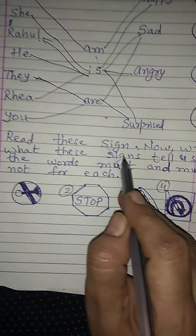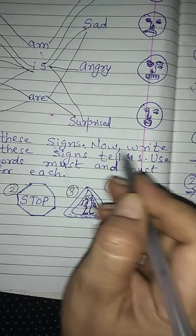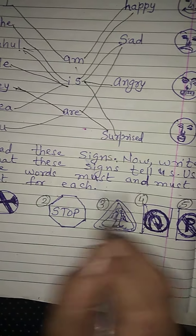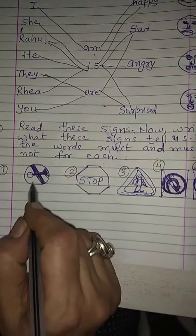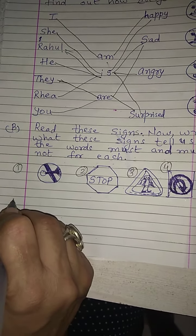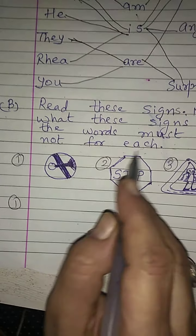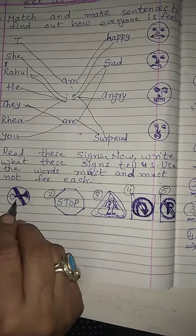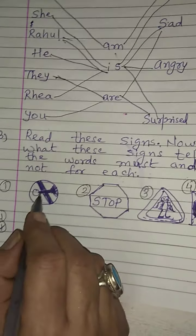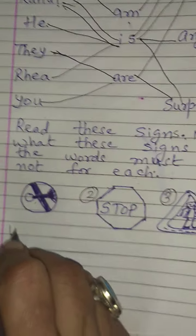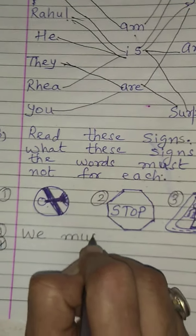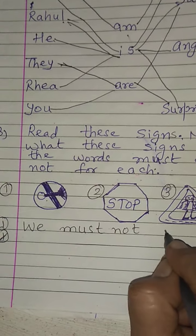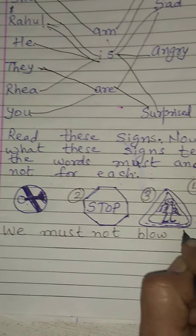Read these signs and write what these signs tell us. Use the words 'must' and 'must not' for each picture. We have to write sentences using must and must not for each picture. The first picture is a horn sign — we must not blow the horn.